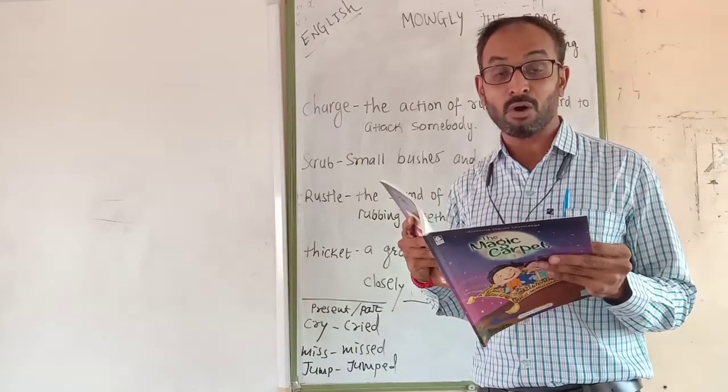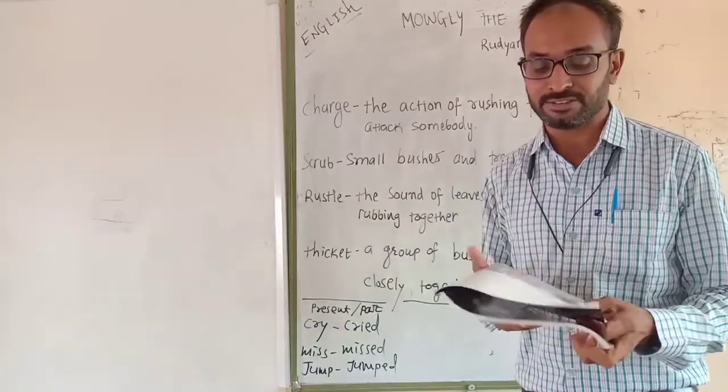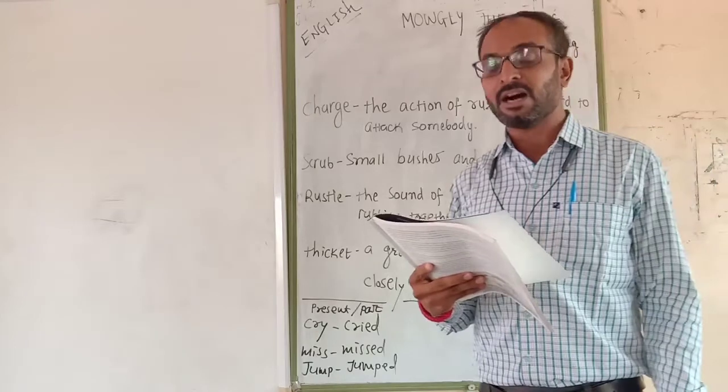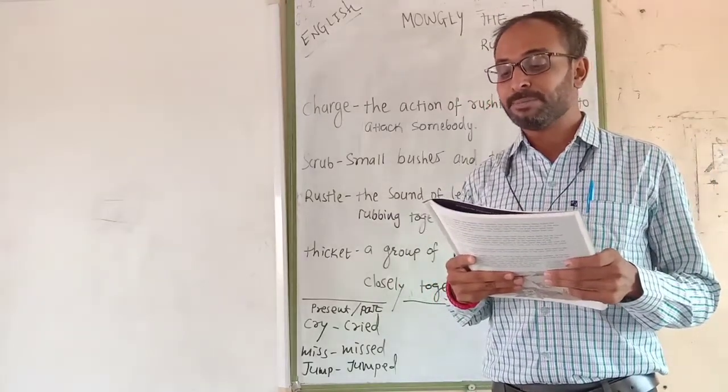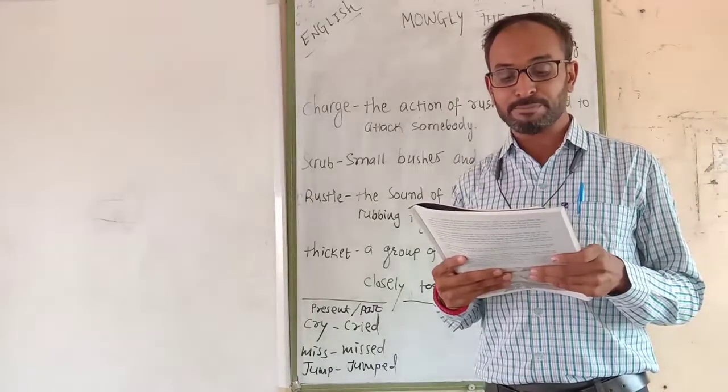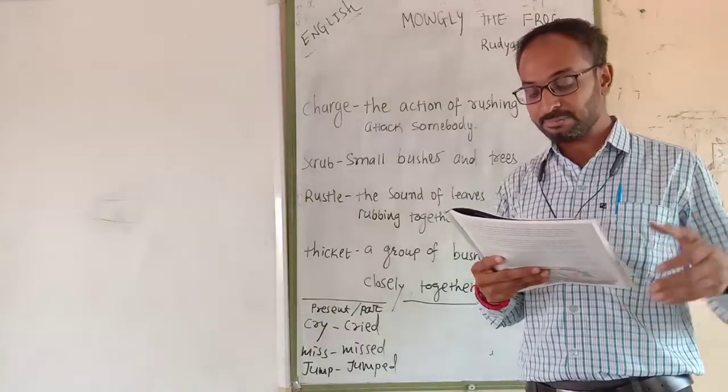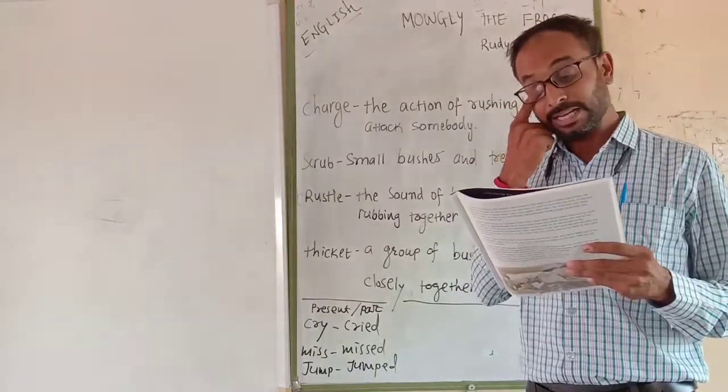He carried it gently and laid it down among his cubs. How little, how naked, how bold. These all are exclamatory sentences. How little, how naked, and how bold, said Mother Wolf. The baby was pushing his way between the cubs to get close to the warm hide. Hide is animal's skin. Skin of animal is called hide here.